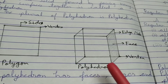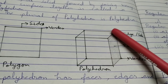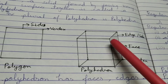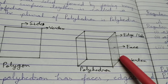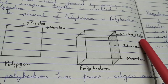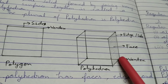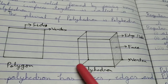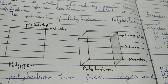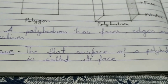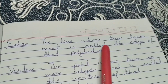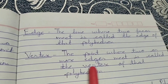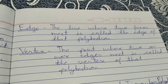A polyhedron is made up of flat surfaces. These flat surfaces are called faces. The line where two faces meet is called the edge. The point where two or more edges meet is called the vertex. So the flat surface of a polyhedron is its face, the line where two faces meet is the edge, and the point where two or more edges meet is the vertex.